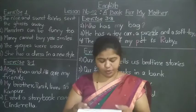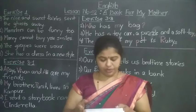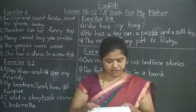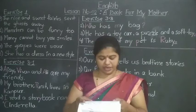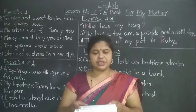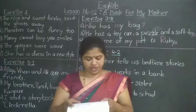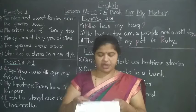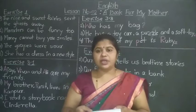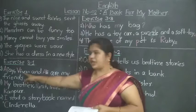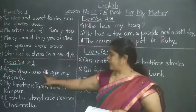Now let's move to exercise 3.1 — rewrite the sentences using capital letters wherever needed. The first one is done for you: My birthday is in July. M is the starting word of the sentence, and July is a name of a month, so J should be written in capital. Next: Ajay, Vivan and Ali are my friends. Ajay, Vivan, and Ali are names of persons — proper nouns — so A in Ajay, V in Vivan, and A in Ali should be written in capital.